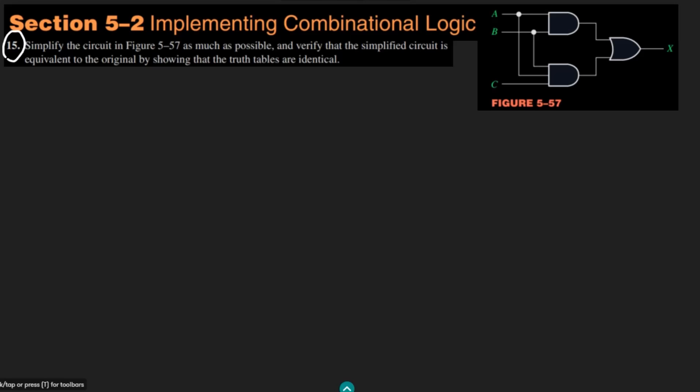Welcome back guys, this is question 15 and here we have to simplify the circuit in figure 5.57. We have to simplify it as much as possible and verify that the simplified circuit is equivalent to the original by showing that the truth tables are identical. So let me first write the expression for the circuit.